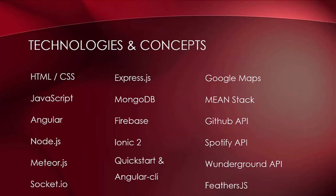We'll also be using Express.js, which is a Node.js based web framework, MongoDB which is a NoSQL database, Firebase which is a remote NoSQL database, Ionic 2 which is a mobile platform that uses Angular 2, the Angular 2 Quick Start as well as the CLI, Google Maps, and other APIs including GitHub, Spotify, and Weather Underground. Also the MEAN Stack — MongoDB, Express, Angular, and Node — and Feathers.js, which is a back end platform for building APIs. Those are just some of the technologies and concepts we'll be working with.